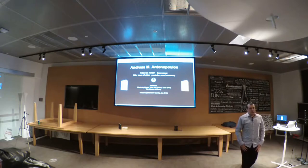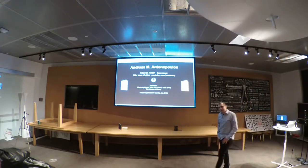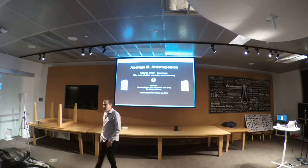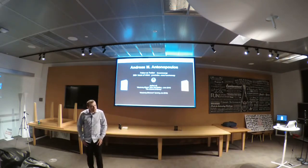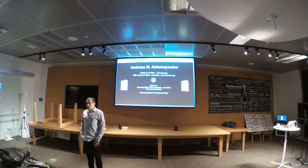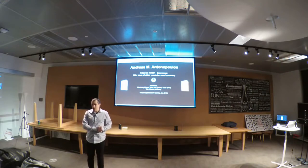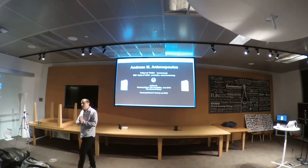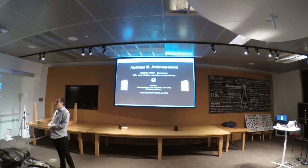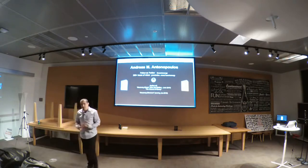I am going to take you on a little journey to explain what these things are. A fork is a condition that occurs in an open blockchain whereby the state of the blockchain diverges into two states, whereby part of the network has a different perspective on the history of transactions than another part. That is the basic definition — a divergence in perspective of the state of the blockchain.